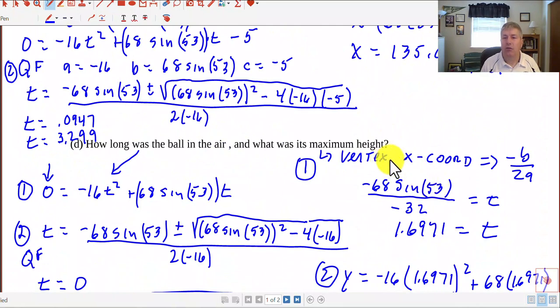We can use from our quadratic formula or from our parabola days, the x coordinate of the vertex is the opposite of b over 2a. Use -b/2a to solve for that value of t. And that t is 1.6971 seconds. I just put in my calculator -68 sin(53°) all over 32 because of our b value and then 2a. So we calculate that t.